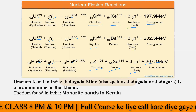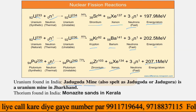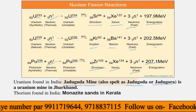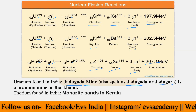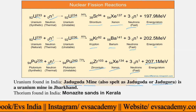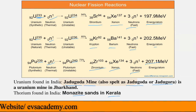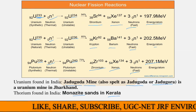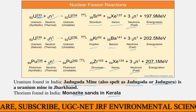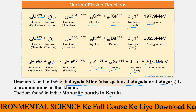In India, uranium is found in two main sources. The Jadugoda mine, located in Jharkhand, is the only uranium mine in the country. Thorium-232 — used to create uranium-233 — is found in the monazite sands of Kerala. Thorium is extracted from those monazite sands. These are the only domestic sources in India for obtaining these nuclear materials.